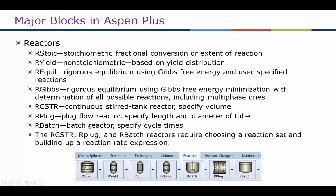R-Stoic requires fractional conversion or extent of reaction — you need to know the stoichiometry and provide the fractional conversion of at least one component. R-Yield requires the stoichiometry but does not require atom balances; it calculates based on the yield distribution of products. R-Equil is a rigorous equilibrium model using Gibbs free energy minimization on user-specified reactions. R-Gibbs, on the other hand, models all reactions possible using Gibbs free energy minimization, including multiphase reactions, whereas R-Equilibrium solves for the equilibrium of a specified reaction.